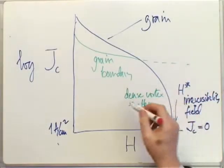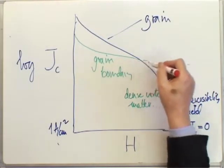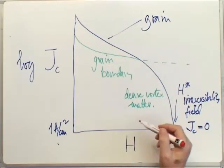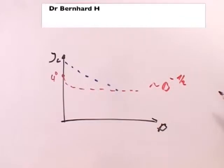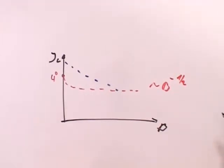As we increase the density of vortices in the material, it turns out that the properties of the grain decrease faster than the properties of the grain boundary. The reason for that is due to dislocations inside the grain boundary.